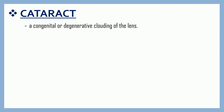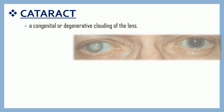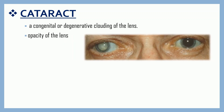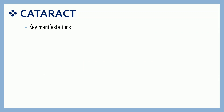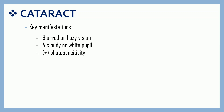Cataracts. It is a congenital or degenerative clouding of the lens, also commonly called opacity of the lens. It develops slowly and eventually interferes with your vision. Causes include the most common factor of aging, patients with certain diseases like diabetes or hypertension, trauma, and congenital causes. Key manifestations include blurred or hazy vision, a cloudy or white pupil, and photosensitivity.